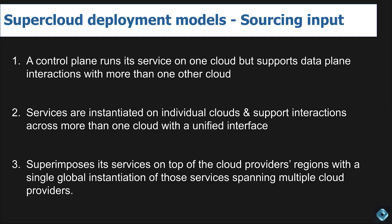We see three deployment models. The first has a control plane on one cloud supporting data plane interactions with more than one other cloud. The second instantiates supercloud services on each individual cloud and within regions, with a unified interface connecting those instantiations to create a common experience. The third superimposes services as a layer — or in Snowflake's case, a mesh — on top of cloud providers' regions, with a single global instantiation spanning multiple cloud providers.